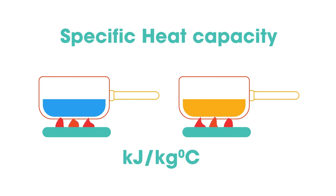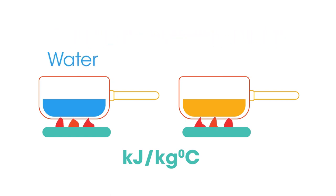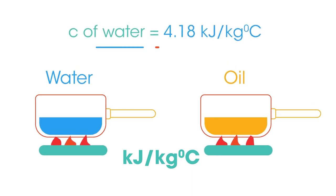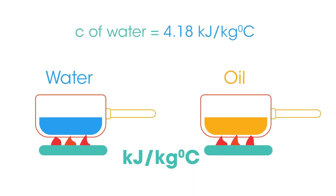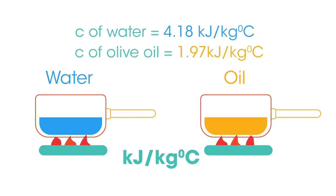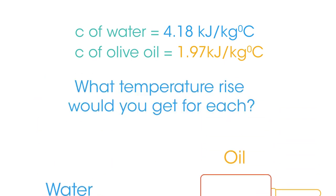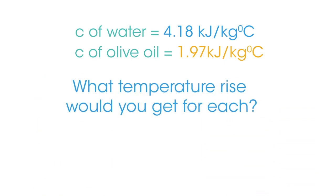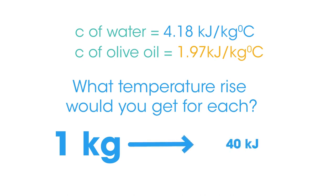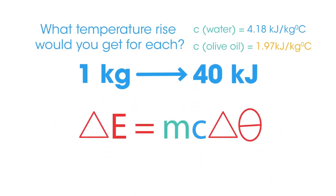Different materials have their own specific heat capacity, and this has consequences in our everyday life. Most of us cook with water more often than with oil. Imagine heating pans of water and oil over identical heat sources. The specific heat capacity of water is 4.18 kilojoules per kilogram per degree Celsius, and the specific heat capacity of olive oil is 1.97 kilojoules per kilogram per degree Celsius.